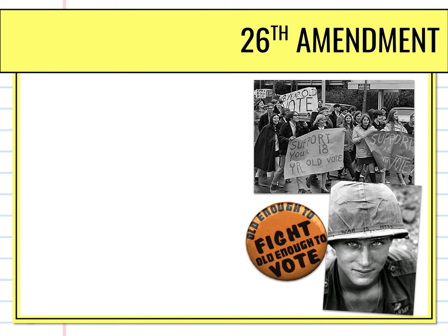One of the biggest things that came out of the 1970s was the 26th Amendment. You'll remember that we were fighting the Vietnam War at the time, and most states had set their voting age to 21 years old. So you couldn't vote until you were 21. It's a state right to determine the voting age.